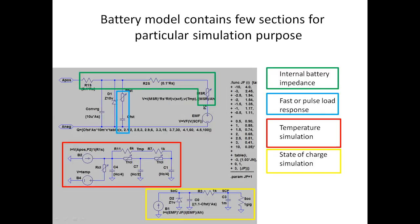The model schematic contains a few sections. The green section is the internal battery impedance, which is variable and depends on several factors such as state of charge, temperature, and some others. Then there is a fast response section — as the name suggests, this section is mainly responsible for fast load pulse current response, and there is a similar temperature section.